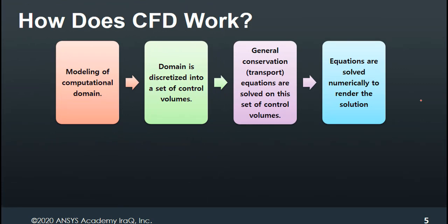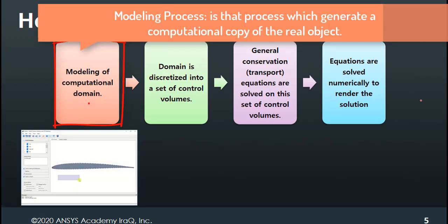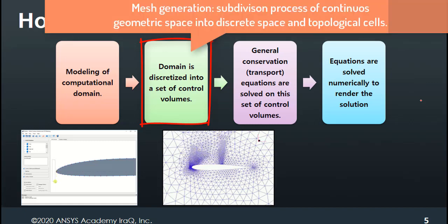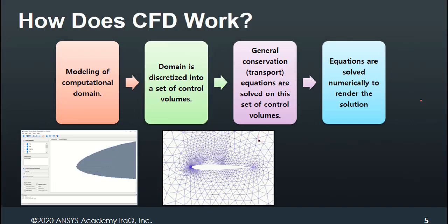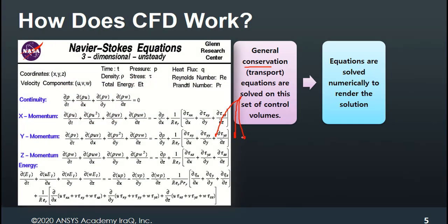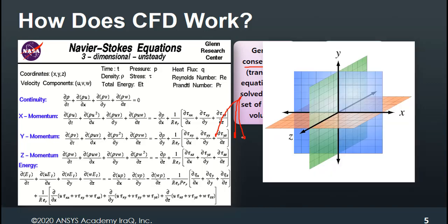For CFD there is a procedure to follow. It begins with modeling the computational domain. The second step is to discretize this domain by subdividing it into many smaller elements called control volumes or control masses. Then the governing transport equations are applied on each element in the domain, specifically on the boundaries of these elements. This gives us, for each element, a set or system of linear algebraic equations. The governing equations include continuity, momentum, and energy, shown here in Cartesian form — though polar and cylindrical coordinate forms also exist.